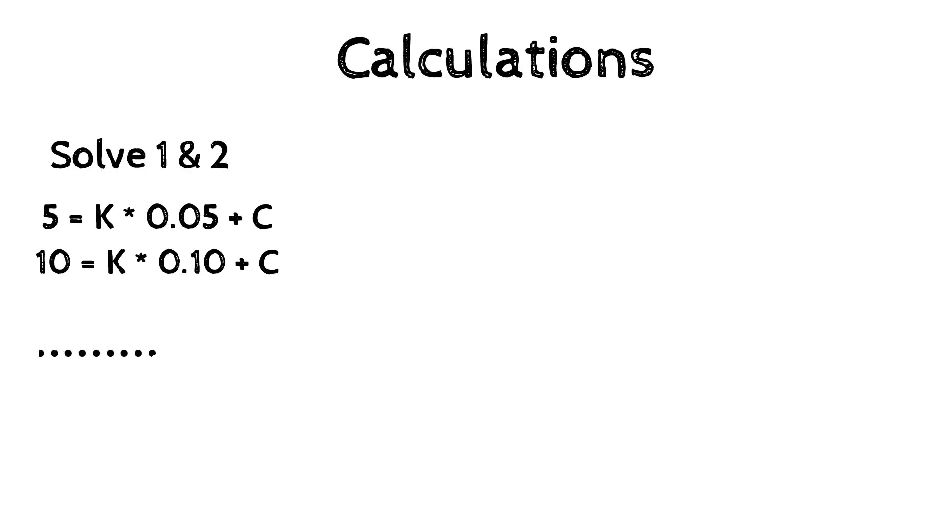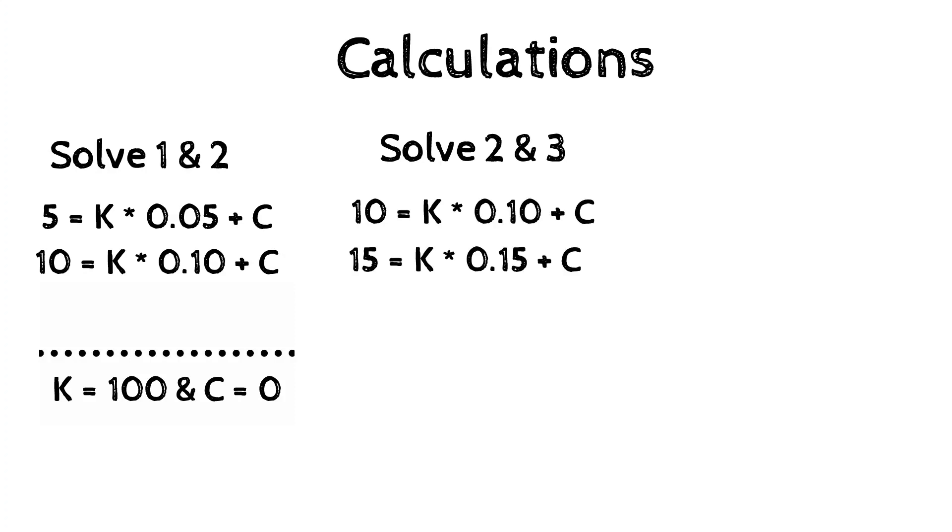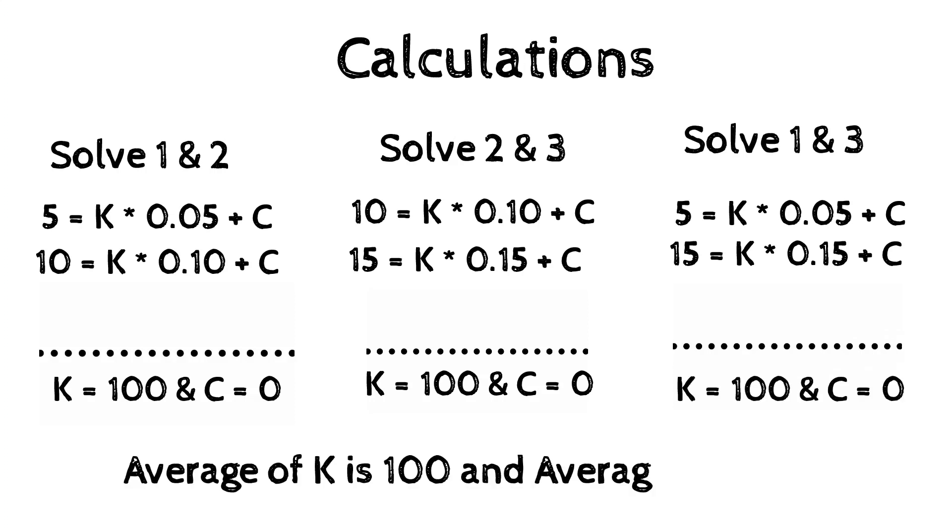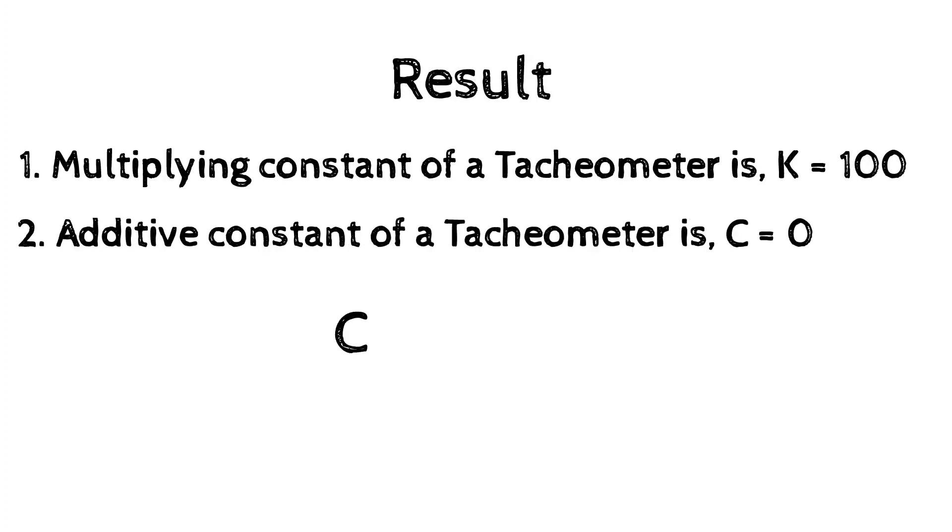Solve equations 2 and 3 simultaneously. We will get K = 100 and C = 0. Similarly, solve equations 1 and 3 simultaneously. We will get K = 100 and C = 0. Take the average of K and average of C. The multiplying constant K is 100 and the additive constant is 0.